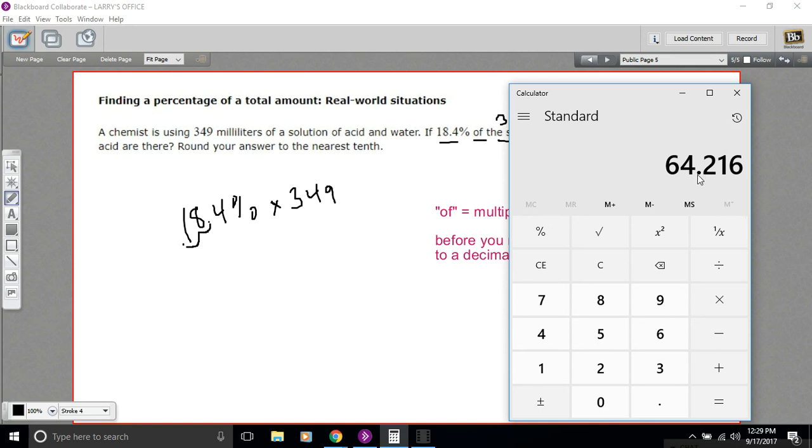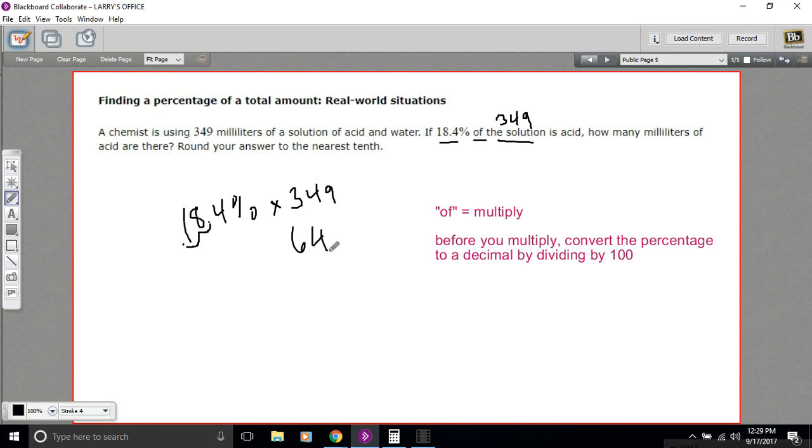Let's see, it says they want us to round to the nearest tenth, so that'd be 64.2. And the units were milliliters.